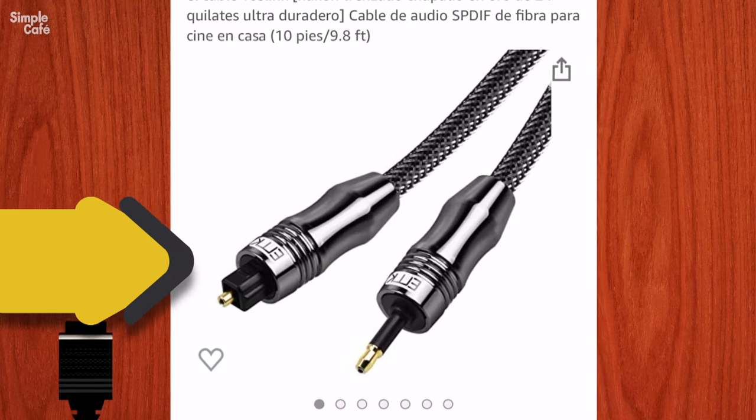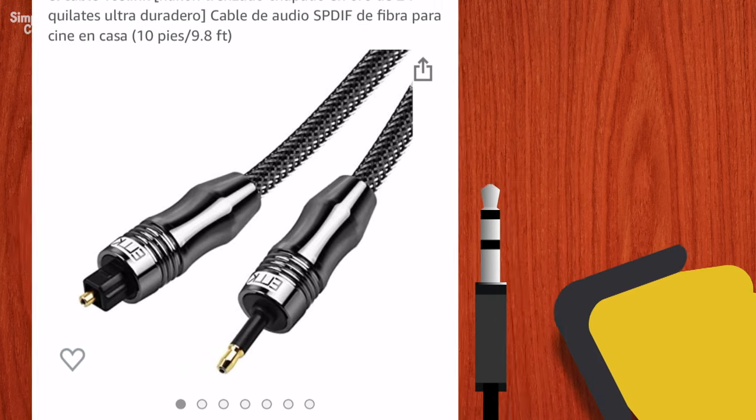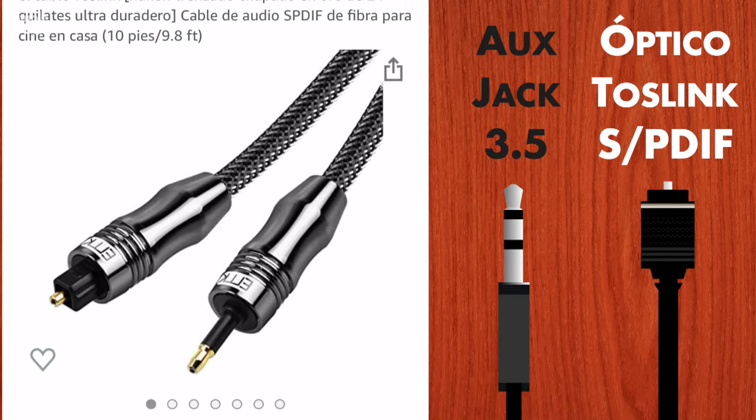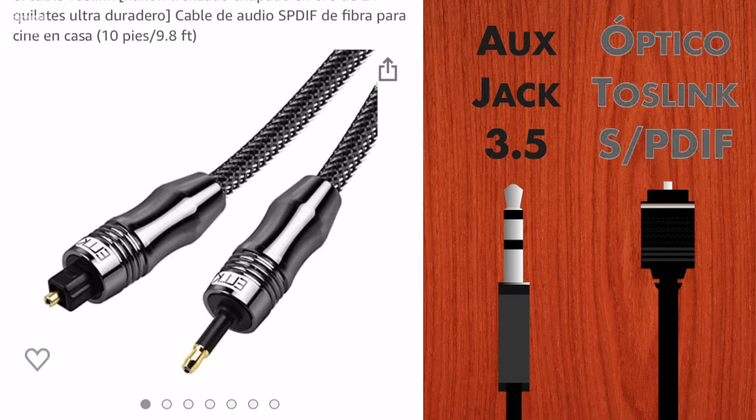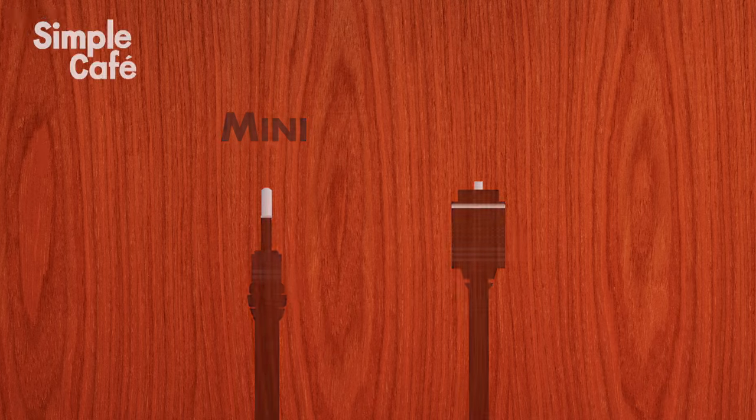Here on the left we see the typical optical cable we're used to, and here on the right is something that looks more like a 3.5 millimeter audio jack. Nevertheless, this is an optical cable. To be specific, a mini optical cable.